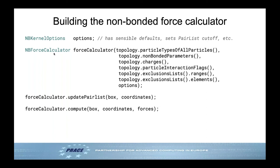You instantiate the non-bonded force calculator by requesting all input data from the topology. It's an object rather than a function because it maintains an internal pairlist — determining which particle pairs are close enough to have van der Waals interaction. Computing this pairlist is expensive, so it's done only every ~100 steps, meaning you don't want to rebuild it every time you compute forces.